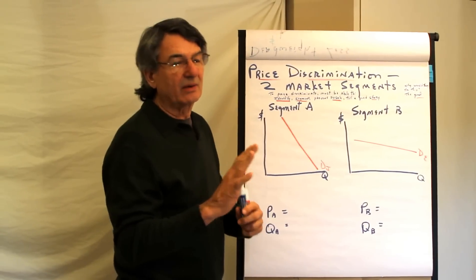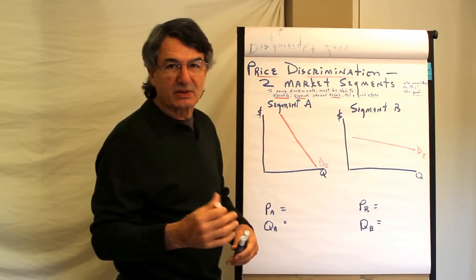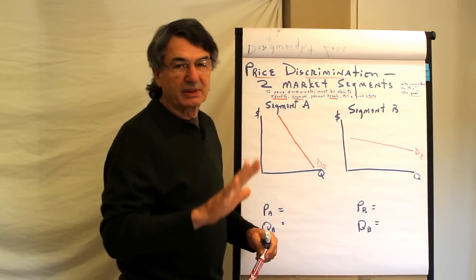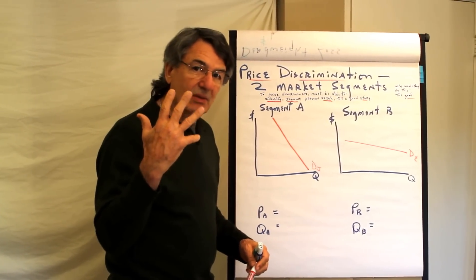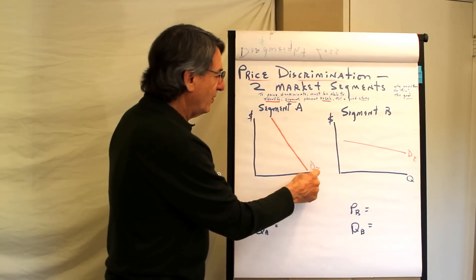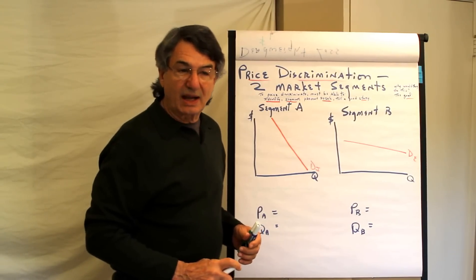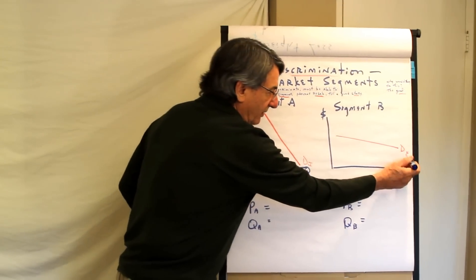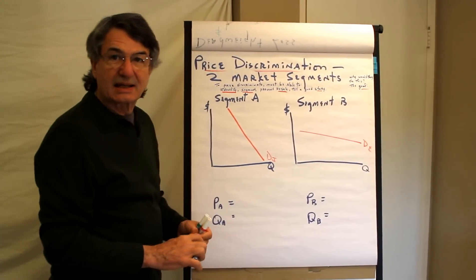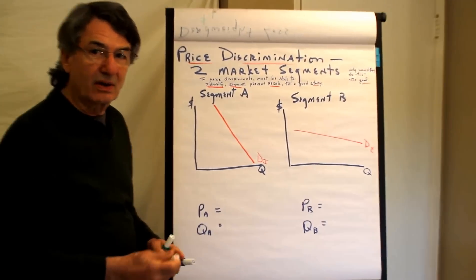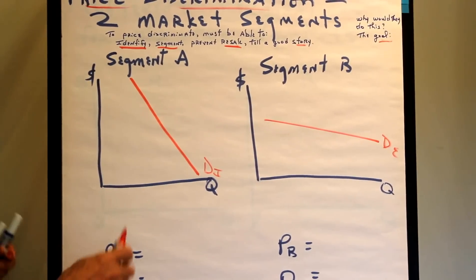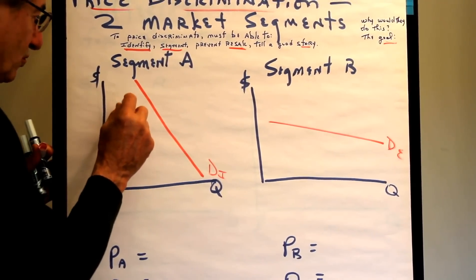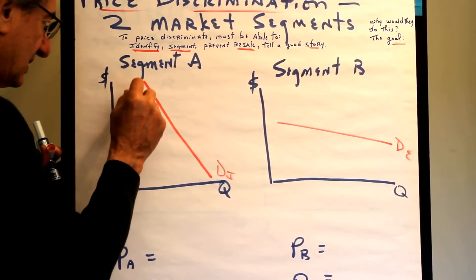Now, the airlines, in fact, are much more sophisticated about their price discrimination. But, this is the simple take on it. Let's say that there are business travelers. Their demand would be inelastic because when they have to fly, they have to fly. And then there are the vacation travelers. Their demand is elastic. They have choices about how they take their vacation. So, if they are able to identify the two groups based on elasticity of demand,